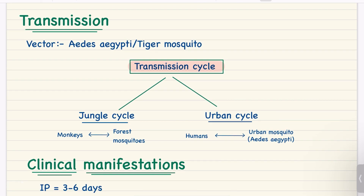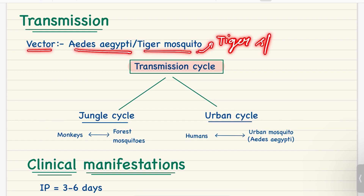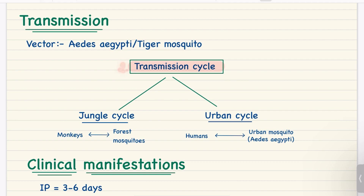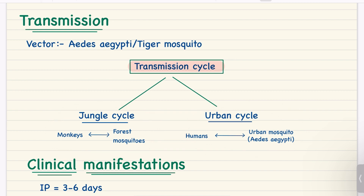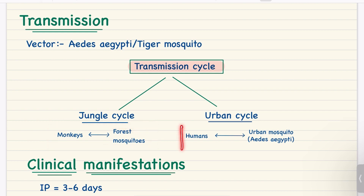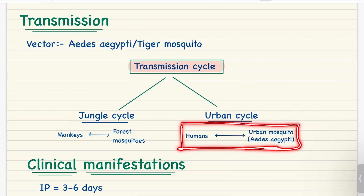For the transmission of yellow fever, the vector is Aedes aegypti, also known as the tiger mosquito — called so because of the tiger spots on this mosquito. We have two transmission cycles: the jungle cycle and the urban cycle. In the jungle cycle, transmission occurs between monkeys and forest mosquitoes, whereas in the urban cycle, transmission occurs between humans and urban mosquitoes, which is Aedes aegypti.